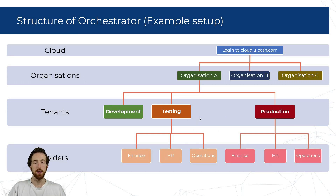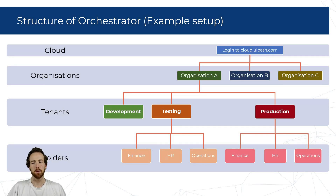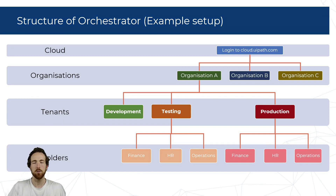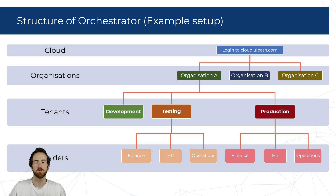Within each tenant you can create folders. You can have just one folder for all the robots and processes, but if you have tens or hundreds of robots in a big organization, it's nice to differentiate between departments for example. You can assign machines, users, and robot users to folders, so you can have dedicated machines for one department and other dedicated machines for robots from another department, keeping a clear structure.